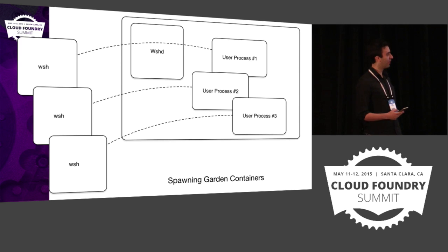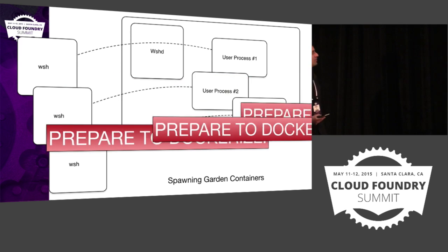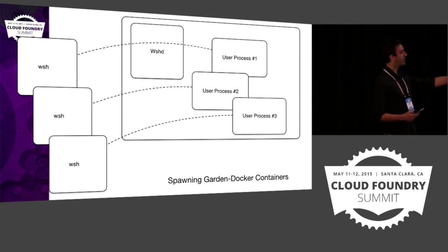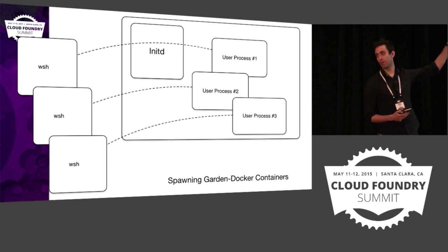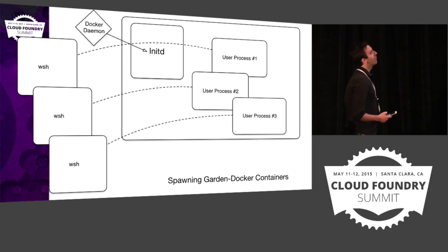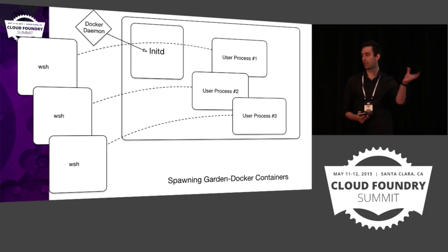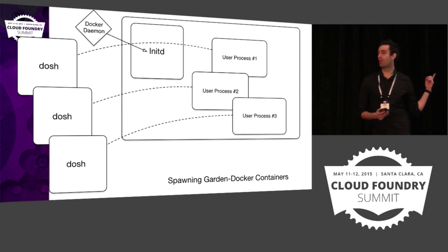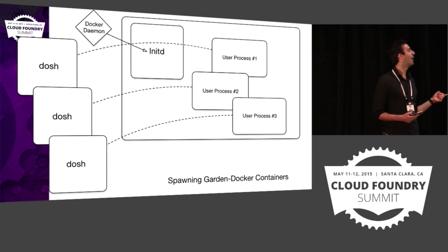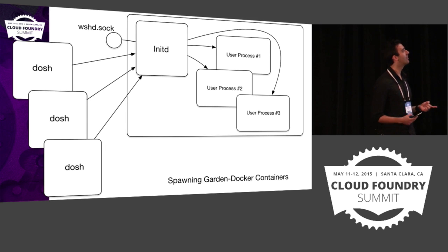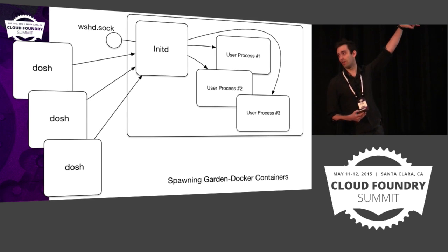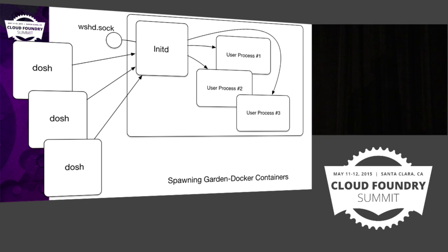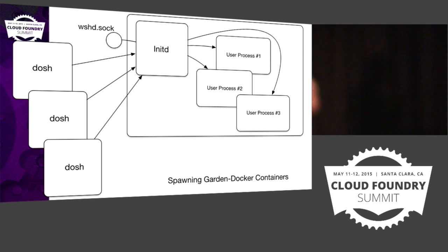We are now going to Dockerize it. This is all that you have to do. Number one, change the name. Number two, that's now called initD because we've got rid of the original thing. Number three, we use a Docker daemon to spawn it instead of cloning it in — same code, just run it inside it. Rename those to Dosh, because it's not worth doing if you can't have a funny name for at least one component. And that's basically it — Dosh talks to the initD over the socket outside, runs processes. Let's have a quick demo.